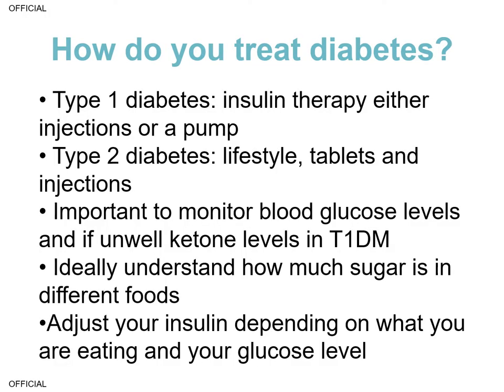How do you treat diabetes? Type 1 diabetes is treated with insulin, either by multiple injections per day or by an insulin pump. Type 2 diabetes is often treated with lifestyle intervention, with an increased emphasis on weight loss to try to achieve remission in early-onset type 2; but the vast majority of patients do require tablets and injections. It's important to remember that type 2 diabetes is a potentially progressive condition. In type 1 diabetes, we monitor glucose levels and if unwell, ketone levels, and education centers around understanding carbohydrate content in food and adjusting insulin dose accordingly.